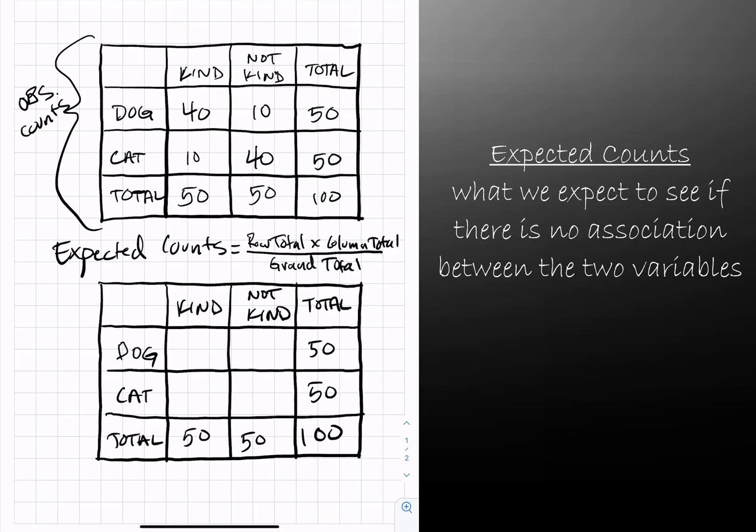To help you visualize it a little bit more, I'm going to color code these cells so you can see where the values are coming from. On the inside, all of these are the observed counts, so we will not use them to calculate the expected counts.